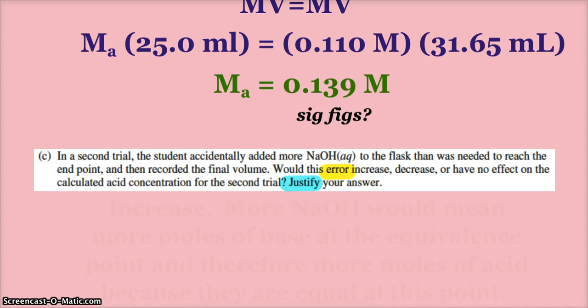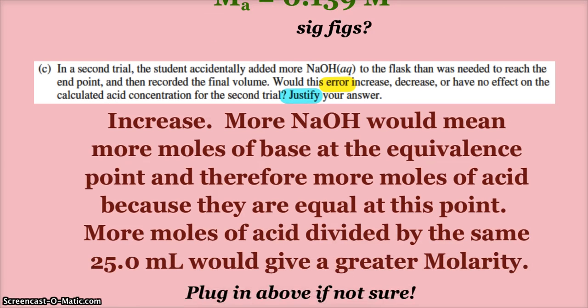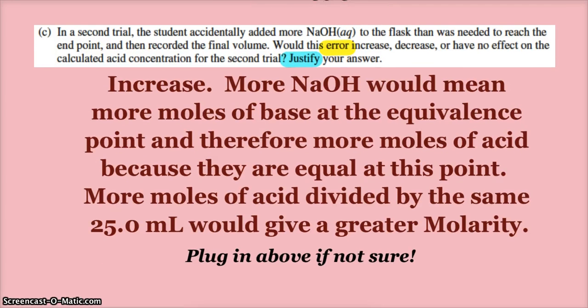Which means there would be more moles of acid, and you still have the same 25 mils of acid. So I'm pretty sure this would increase our calculation. More sodium hydroxide would mean more moles of base at the equivalence point, therefore more moles of acid. Blah blah blah, if you weren't sure...